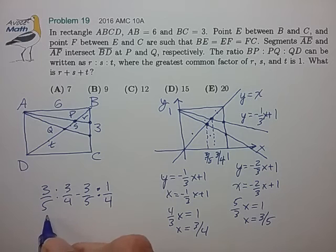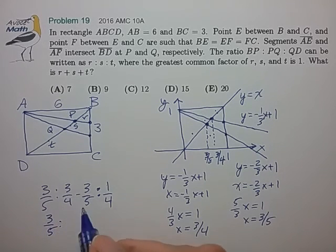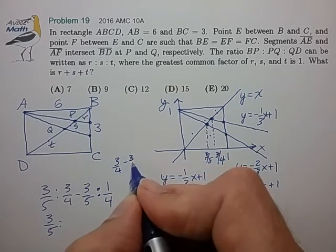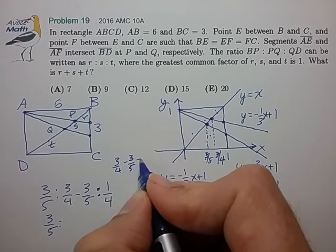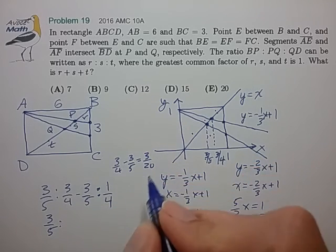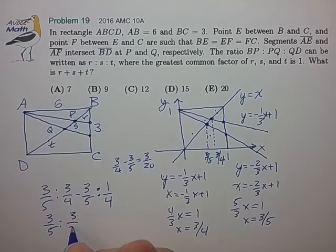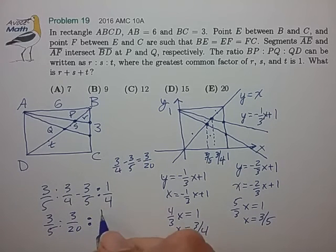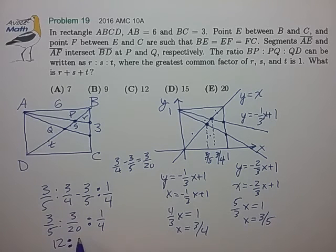We have three-fifths, three-fourths minus three-fifths. Let's work that out. So that's equal to 15 minus 12, which is three over 20. One-quarter is what it is. So we can just multiply all of these by 20 to arrive at 12 to 3 to 5.